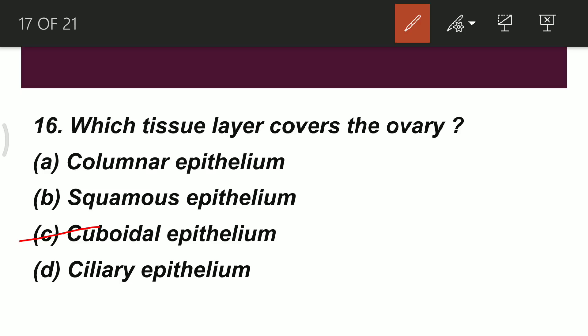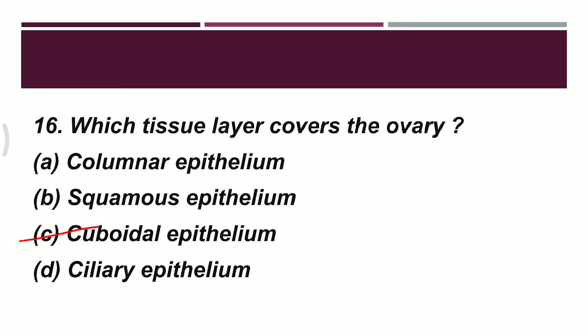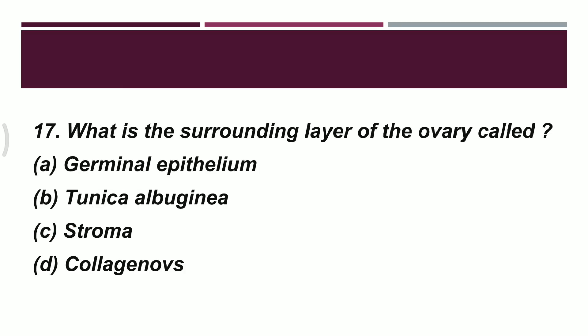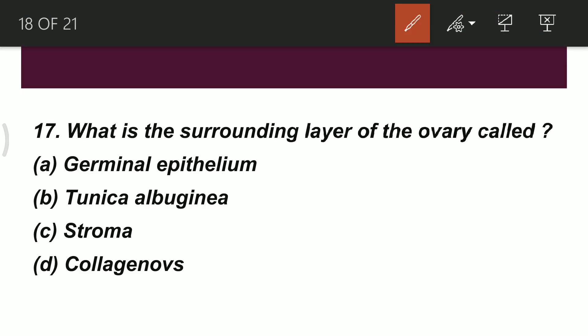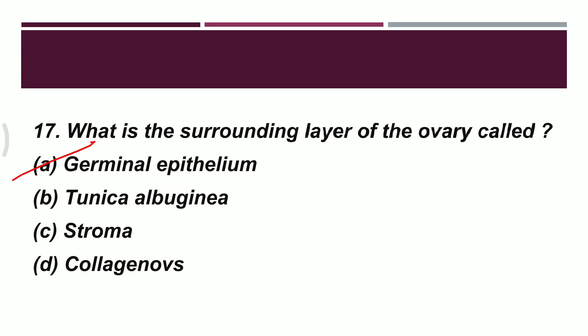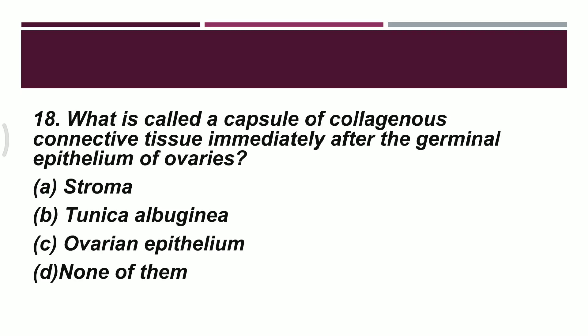Question 17: what is the surrounding layer of the ovary called? Option A: germinal epithelium. Option B: tunica albuginea. Option C: stroma. Option D: collagenous. The correct option is A — germinal epithelium — this epithelium is present around the ovary as a proper covering layer.